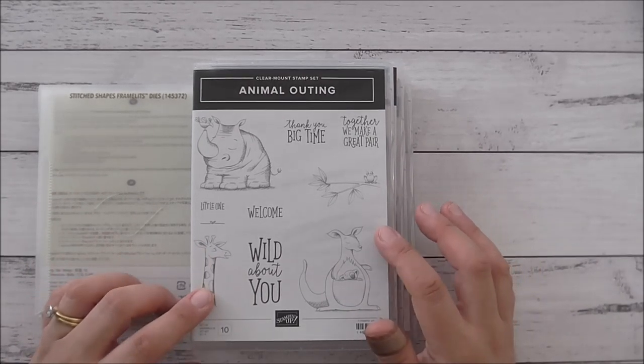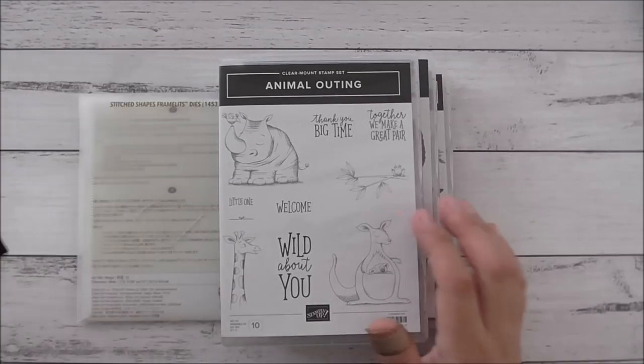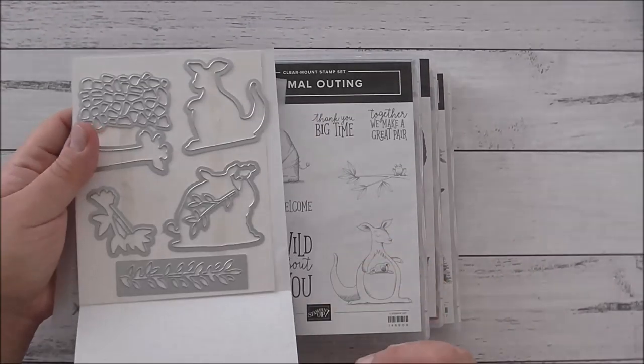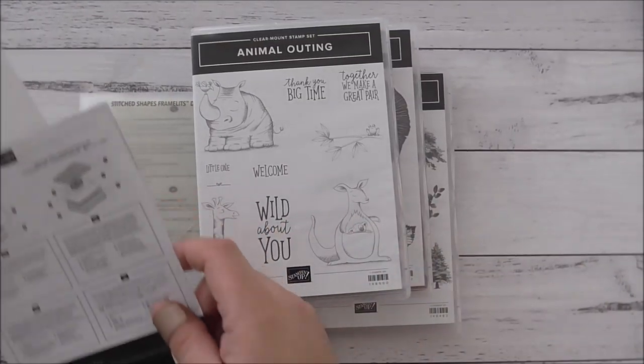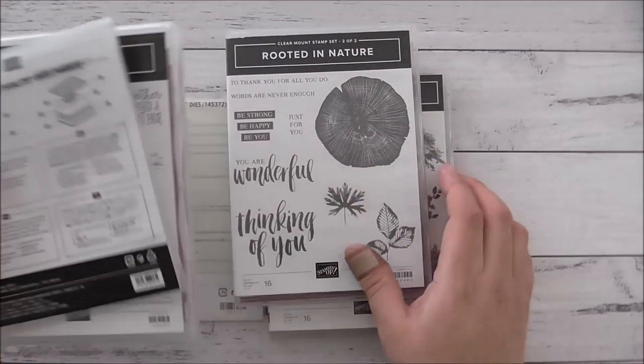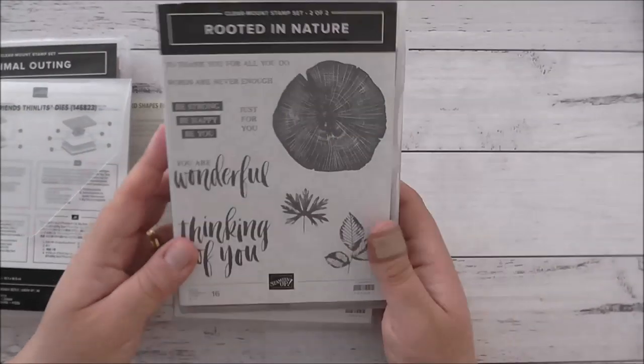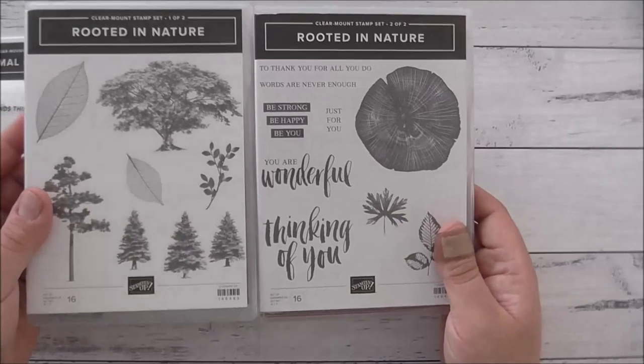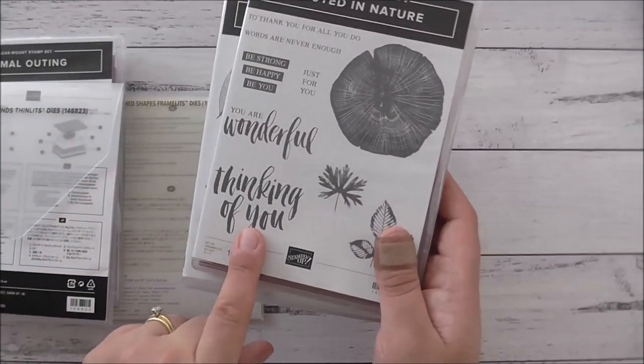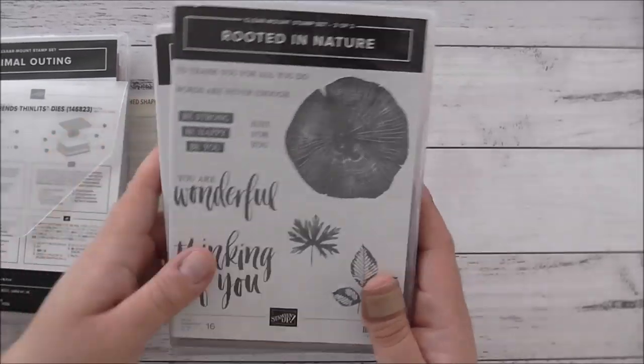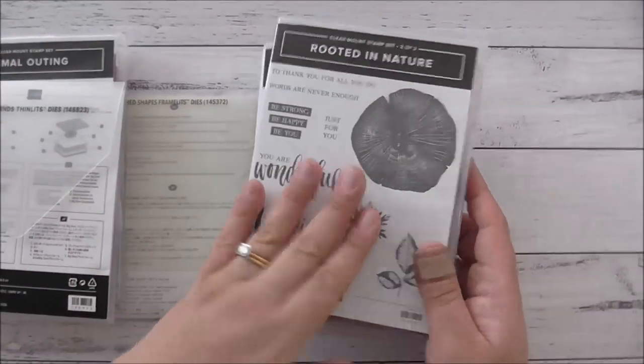What I'll be using is Animal Outing with their matching Animal Friends dies. These are super cute. Today I'll be using a kangaroo. This is a Thinking of You card and the sentiment I'm using is from the Rooted in Nature stamp set. This is a two set stamp set. I'm using the Thinking of You sentiment. I really love that sentiment.